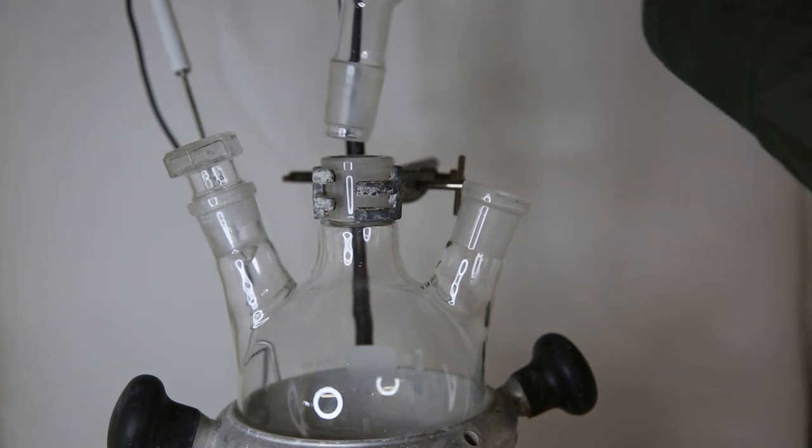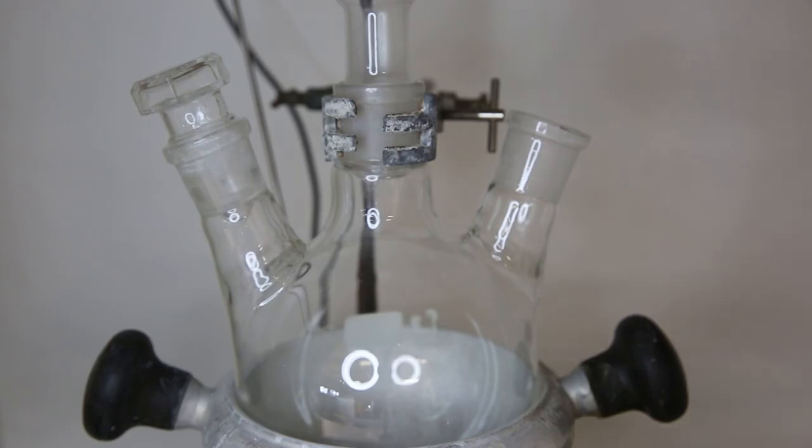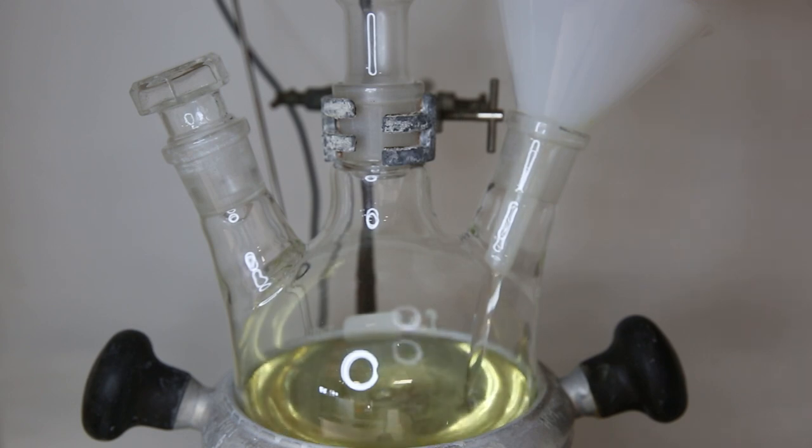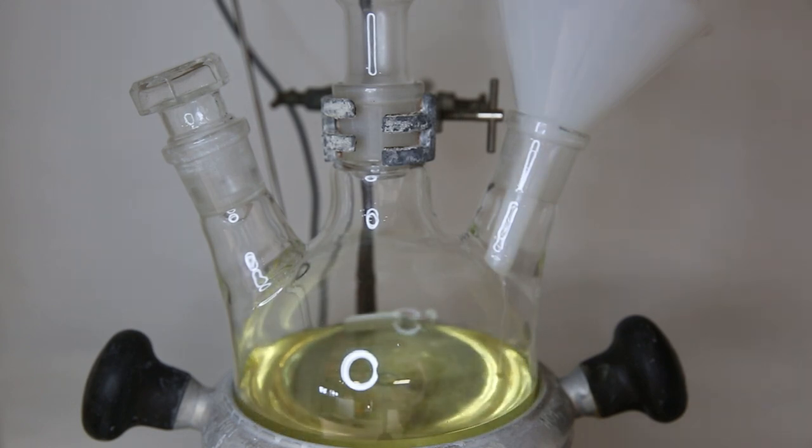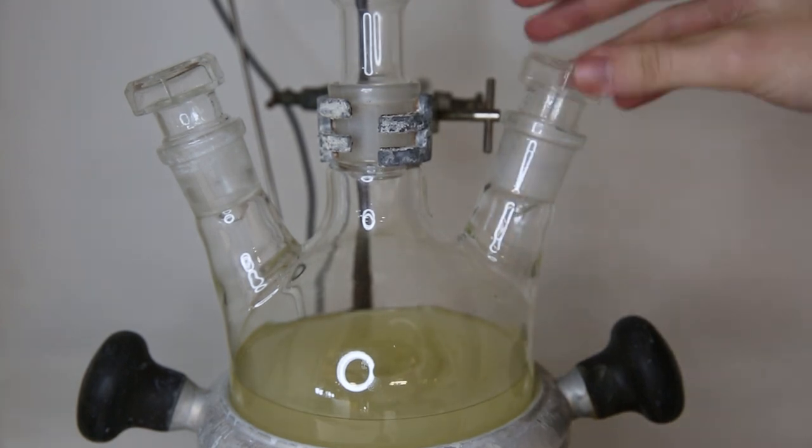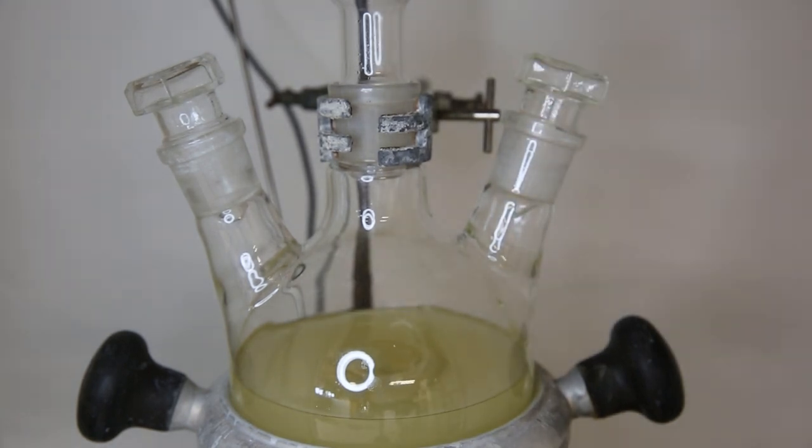Then I set it up for a simple reflux, and I can now add 500 milliliters of the dried sunflower oil to the reaction flask. While stirring, I add the methanol sodium hydroxide solution to the oil, and stopper the flask, and start heating the mixture to 60°C. So now the reaction can just be left alone for a few hours, and I can come back later.